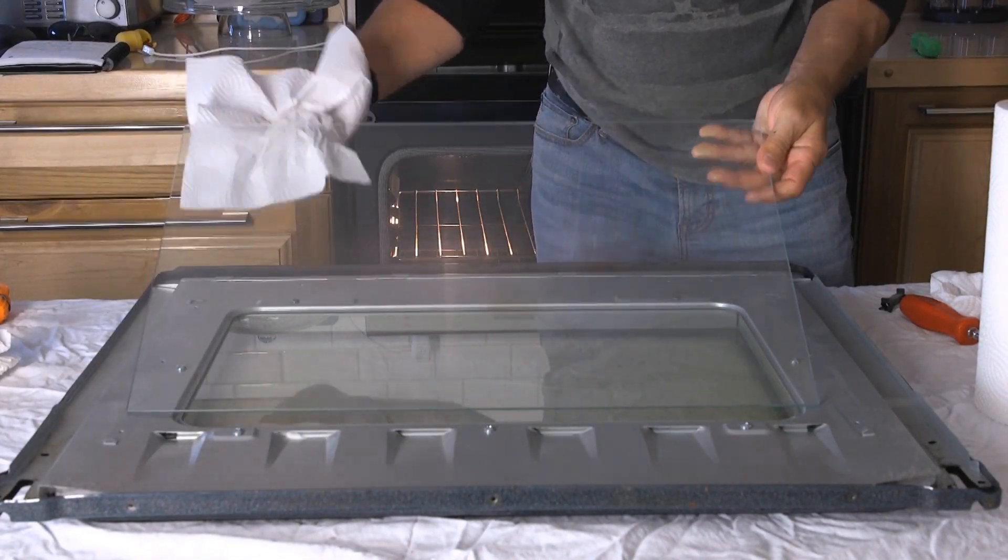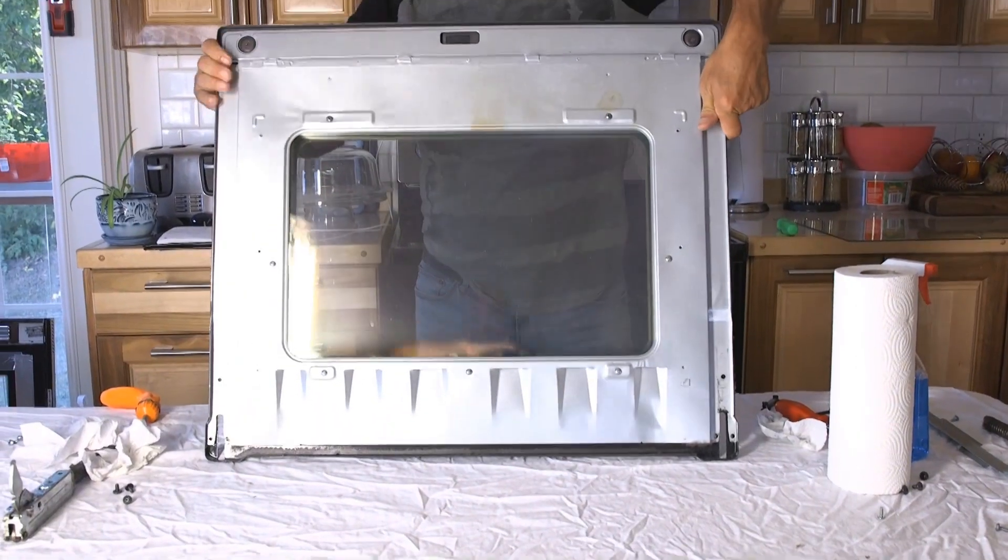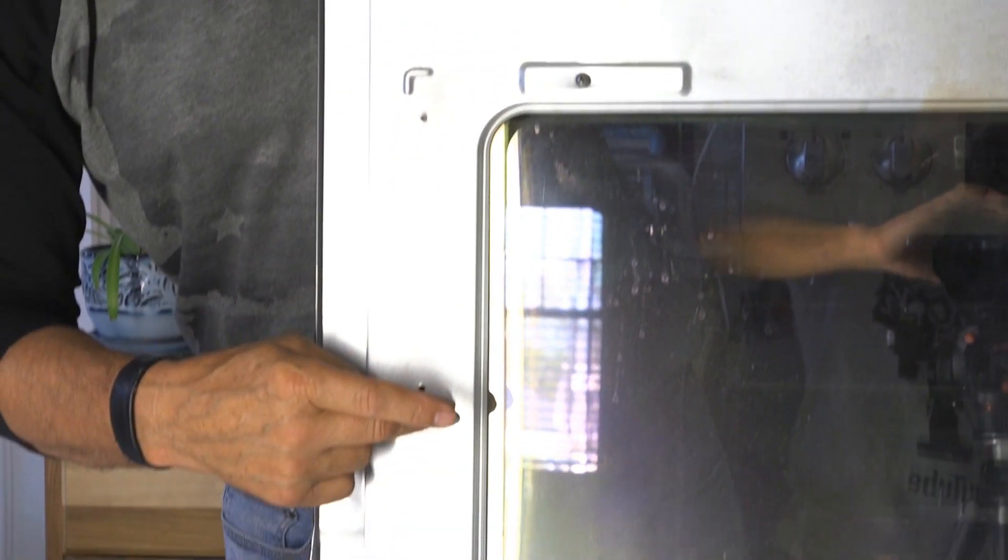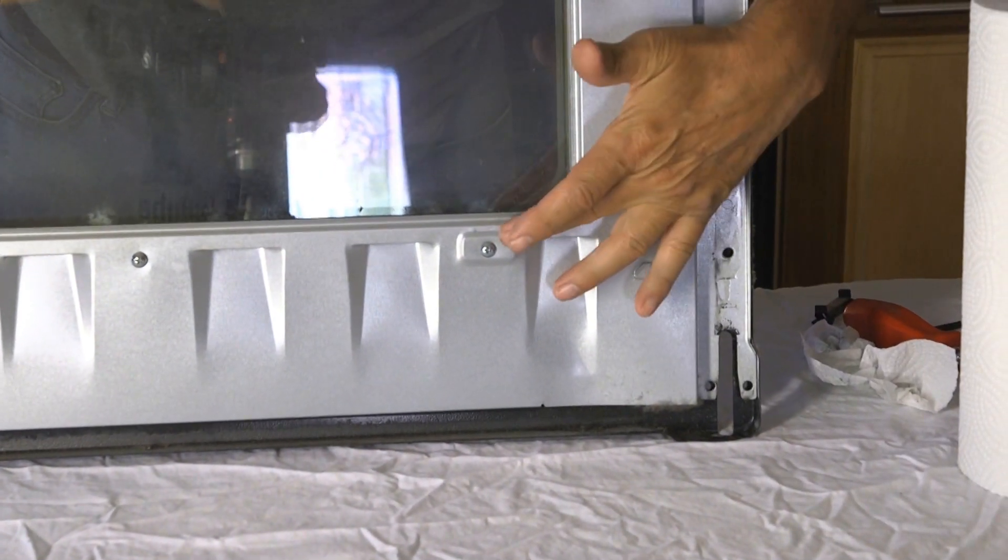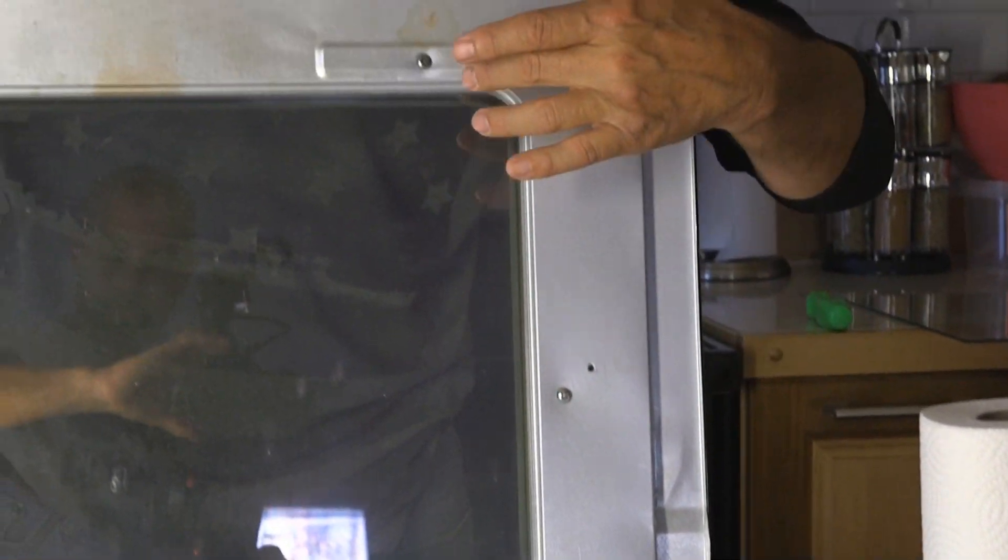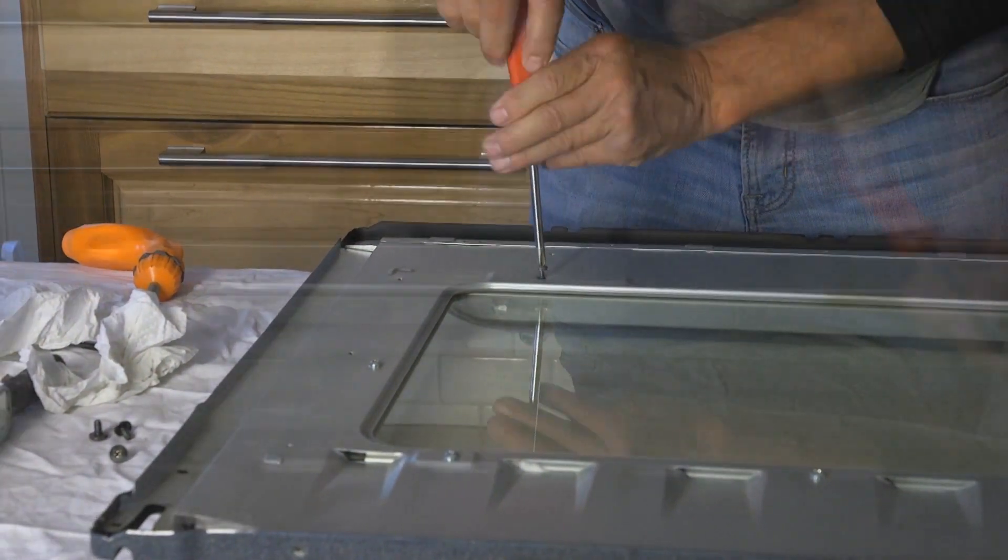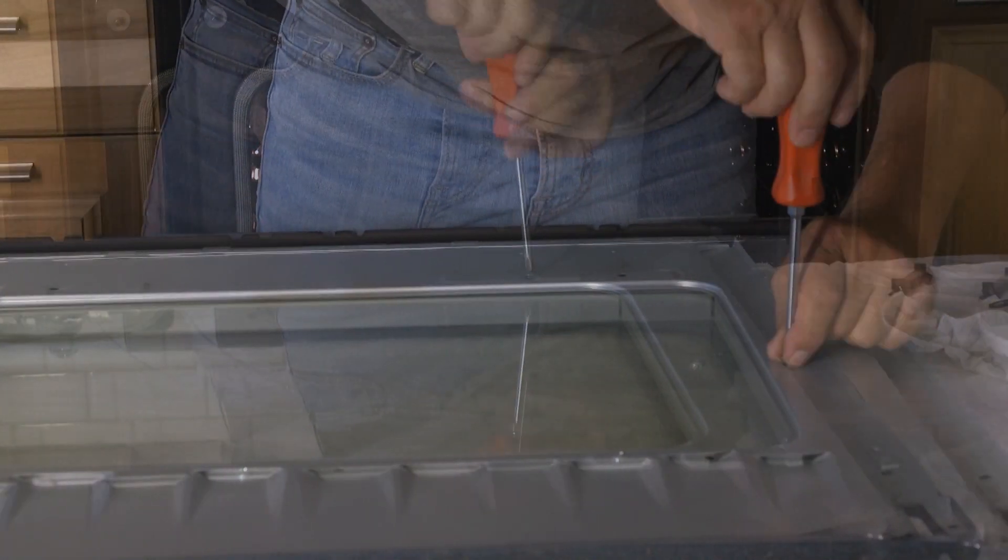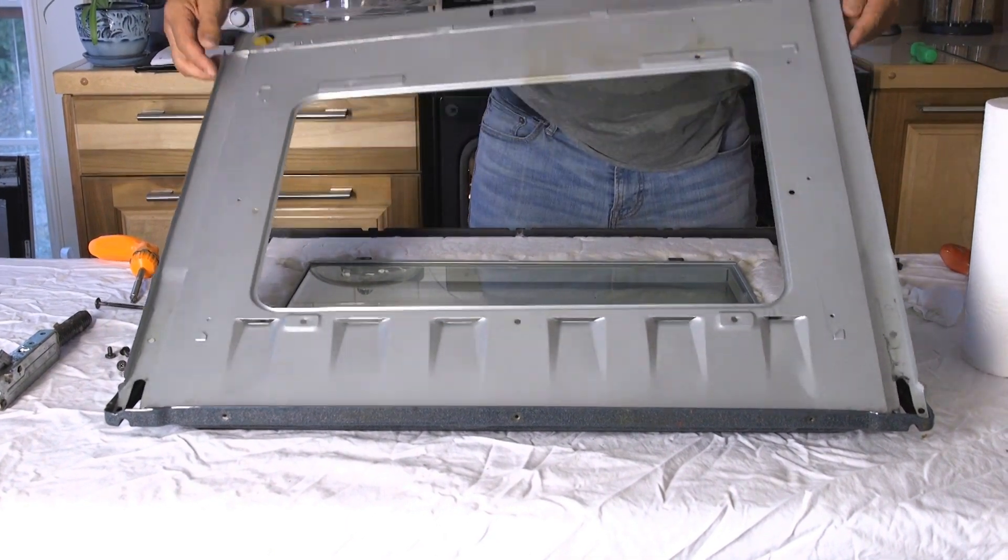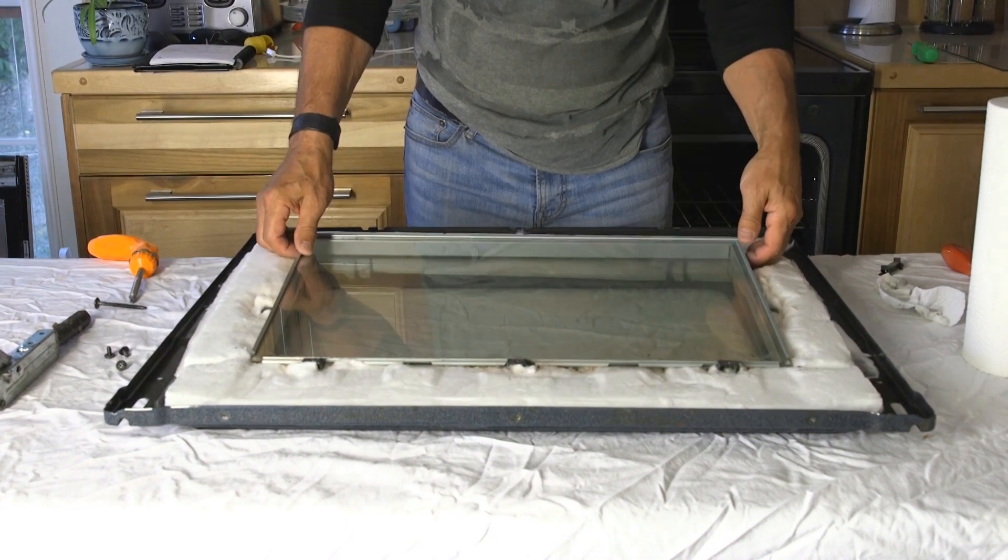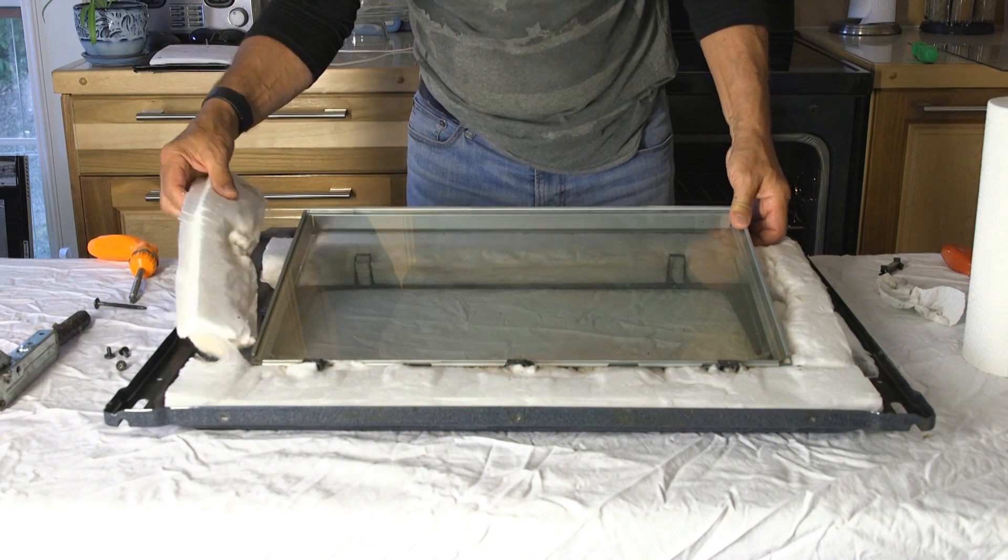When you're done cleaning, set aside the window and it's time to take apart the rest of the back panel. There are 7 screws left to remove the heat shield. Set the heat shield aside, then pull out the glass assembly from the back panel.